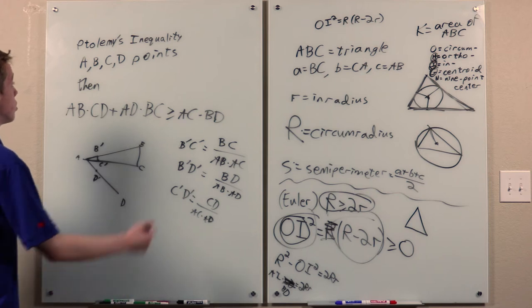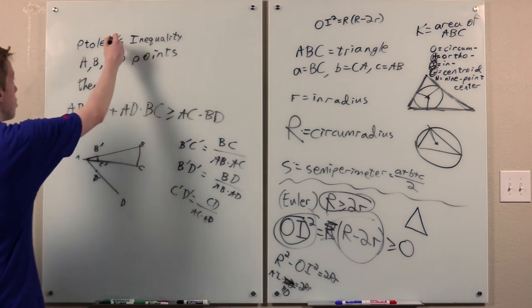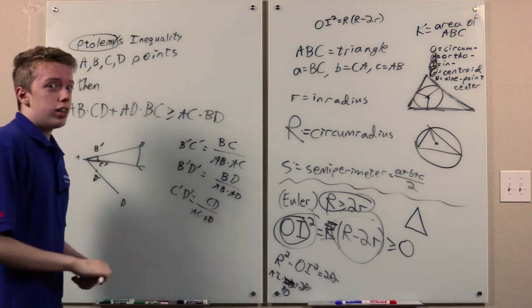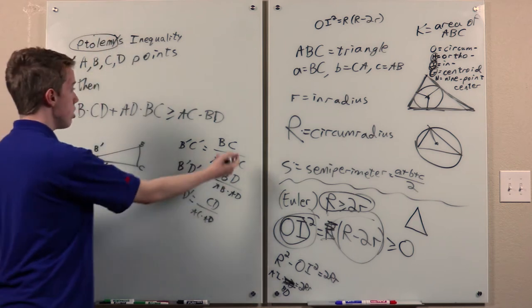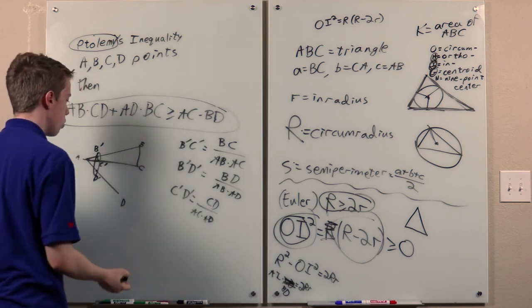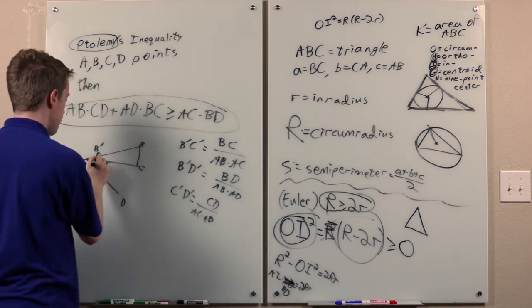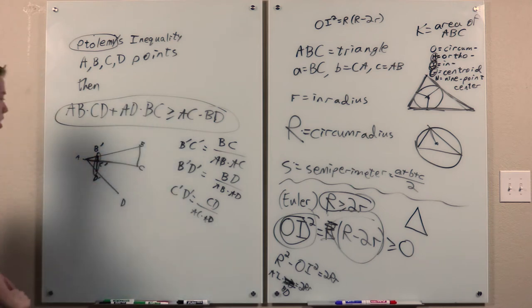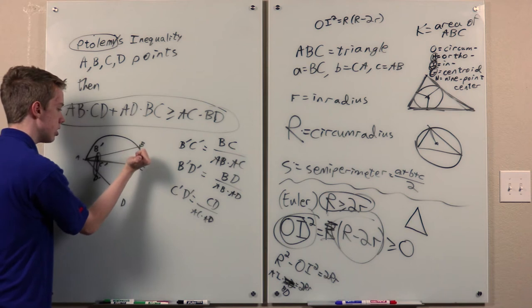Well, actually, this inequality, of course, is very much a classic, considering how long ago he lived. But anyway. So now, this just becomes the triangle inequality on this triangle. With equality, if and only if, c lies on line segment b, d. Which holds, if and only if, a, b, c, and d are concyclic, in that order. Or, they're collinear.